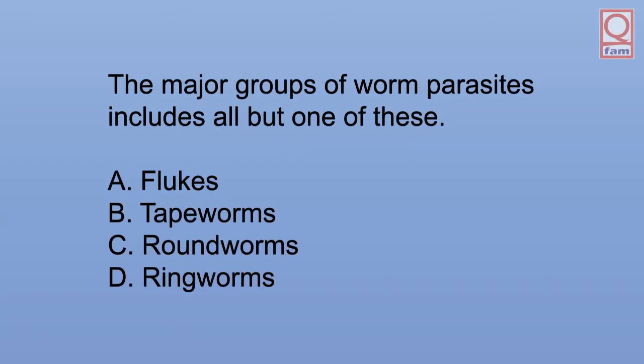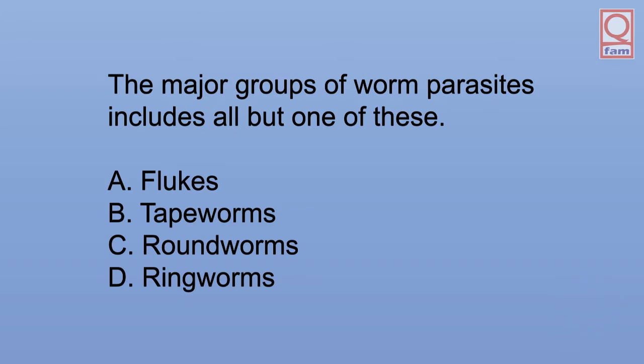The major groups of worm parasites includes all but one of these. A. Flukes. B. Tapeworms. C. Roundworms. D. Ringworms. The answer is D. Ringworms.